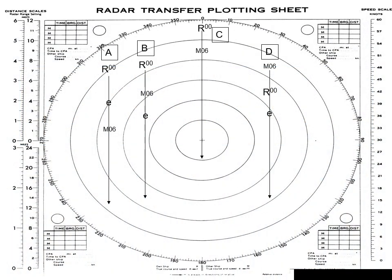I like to call these collapsed triangles or flat triangles. They still have all three legs of the triangle in them. In Target A, we have our true course and true speed — our E to R. We have relative motion, R and M. And we have the contact's true course and true speed, E to M. We're heading north and the contact is heading south.